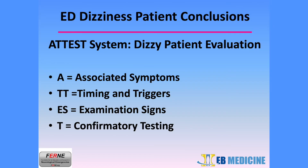In conclusion, the ATTEST system for the evaluation of the dizzy patient includes the following: A — Associated symptoms; T — Timing and triggers; E and S — Examination signs; and T — Confirmatory testing. ATTEST.